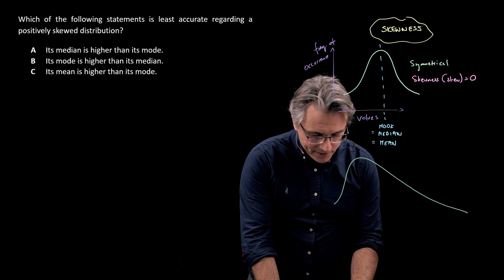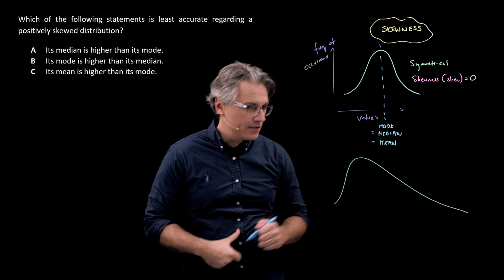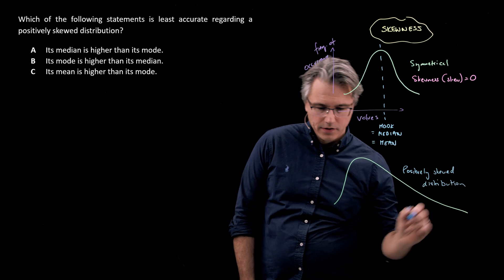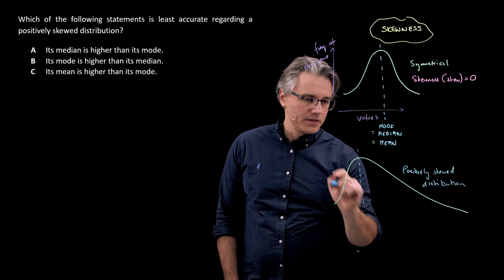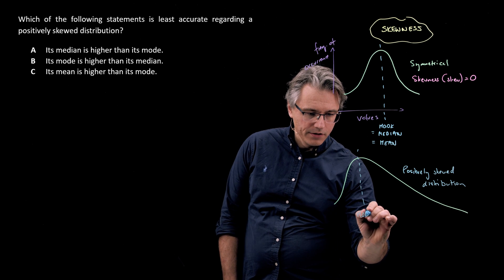Now let's identify the various items. First of all, let me write this is a positively skewed distribution, and the highest point here is going to be always the mode, the most frequently occurring item.